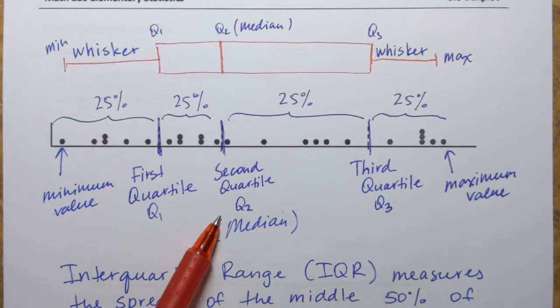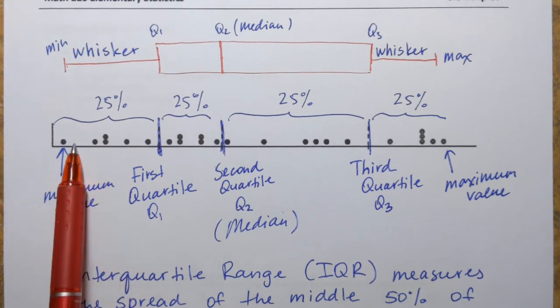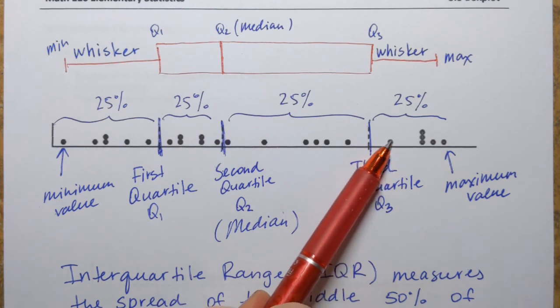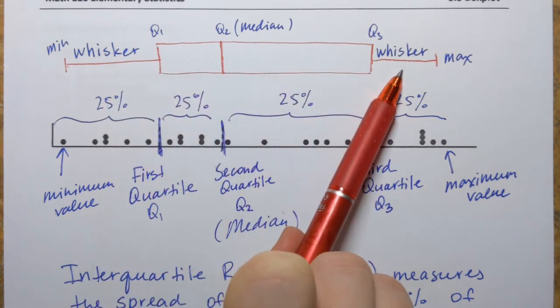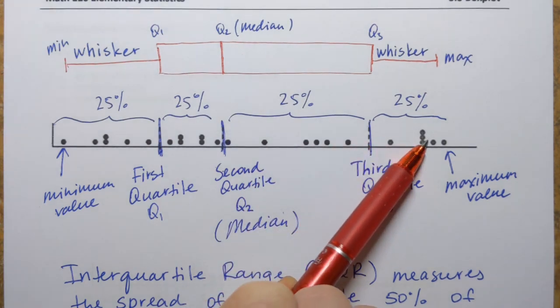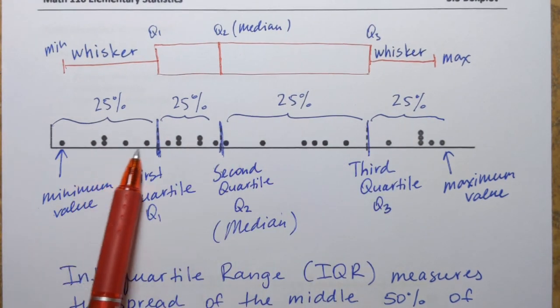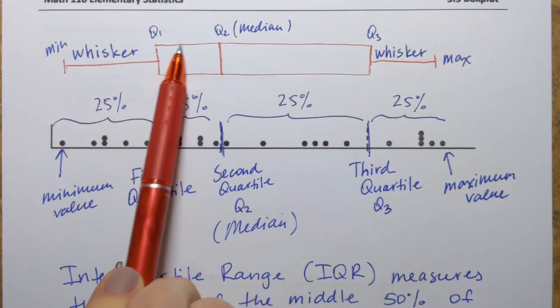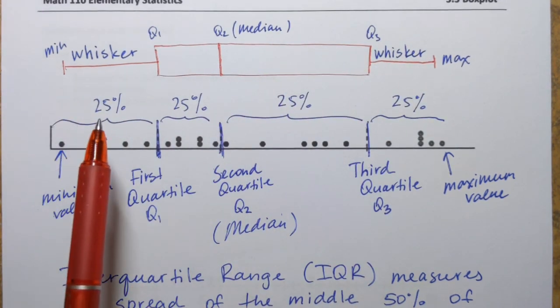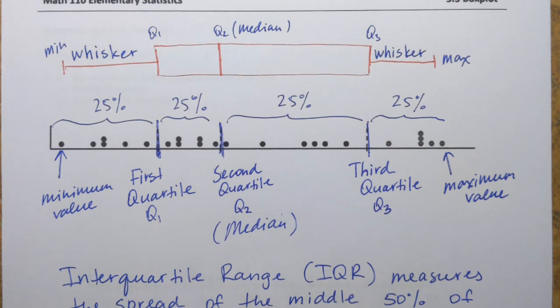At the end of this video, I'd like to make a note that the dot plot that I use here is just for illustration how the data set is related to the box plot. But when you graph a box plot, you don't draw the dot plot. So you basically only have a number line and a box plot right above it. We're going to do an example in the next videos and you'll see how a box plot is constructed from scratch.